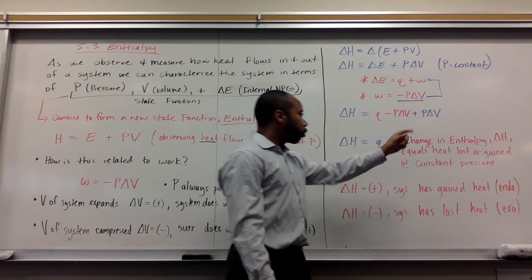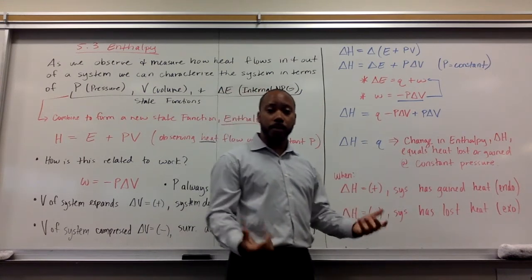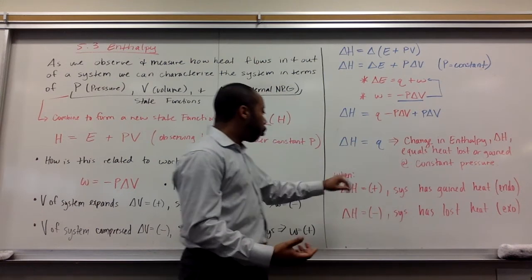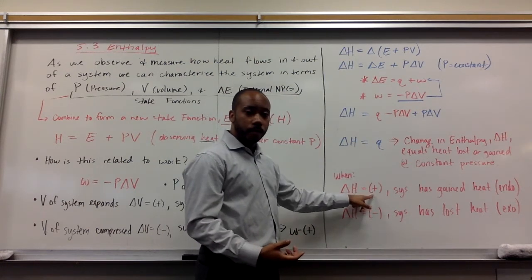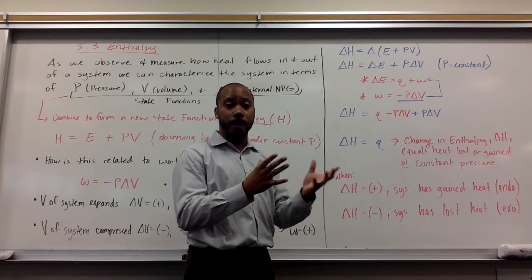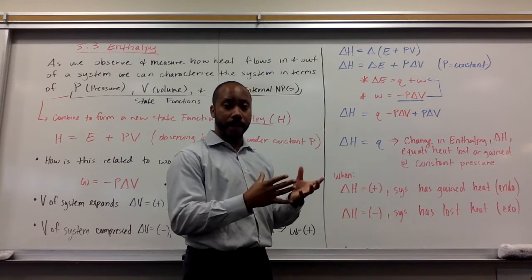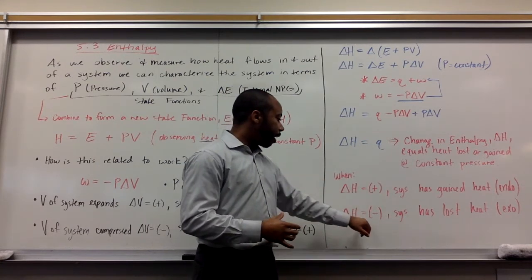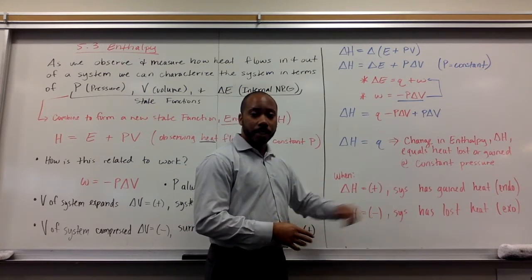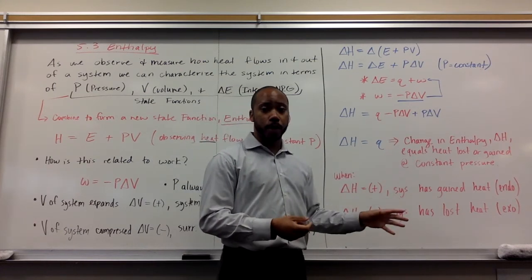So your change in enthalpy, delta h equals the heat lost or gained at constant pressure. When delta h is positive, this means your system has gained heat. From my last video lecture, that means it's endothermic. Delta h, when it's negative, that means the system loses heat. So that is exothermic.